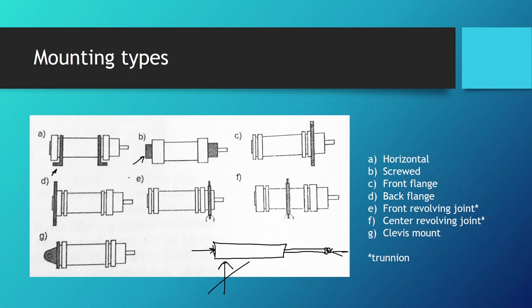First we have the horizontal mounting type, also called the foot bracket mount. We have the screwed on the back and in the front mount type. We have the front flange and the back flange. We have the front and center revolving joint, which is also called the trunnion, and we have the clevis mount.